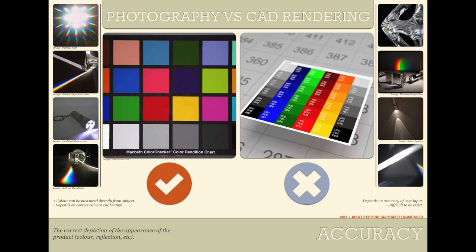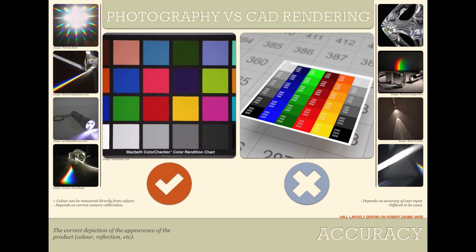Starting off: accuracy — the behavior of light and in particular the behavior of color. This will largely depend on the render engine used, however despite this, accuracy was an easy one. A camera is designed to give accuracy, and making a render engine to simulate accuracy is very, very difficult. So for this first category, photography was an instant win.